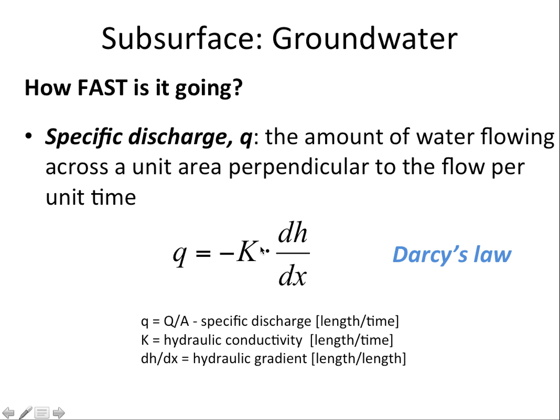Q is equal to the hydraulic conductivity in length per time times the hydraulic gradient, which is unitless. This is also known as Darcy's Law, so you might have heard of that before.